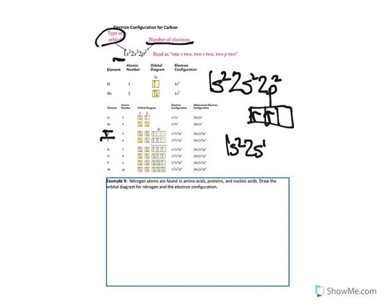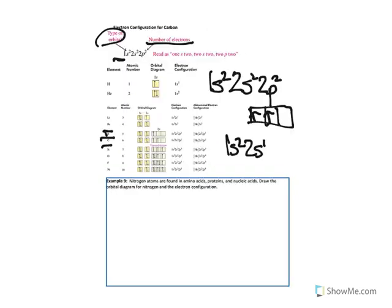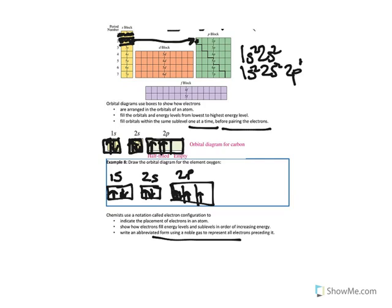Boron has five electrons — two in the first, two in the second, and now we're coming across to the 2p, so we have one in the 2p. The electron configuration for boron is 1s², 2s², 2p¹. Carbon is 1s², 2s², 2p². Anyone noticing a pattern?